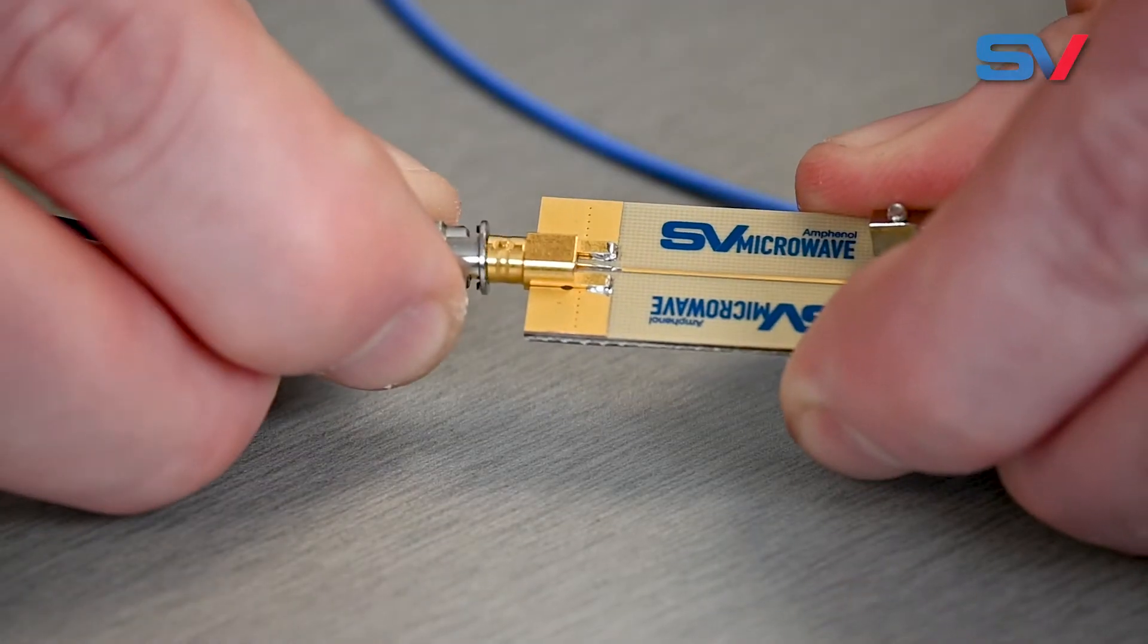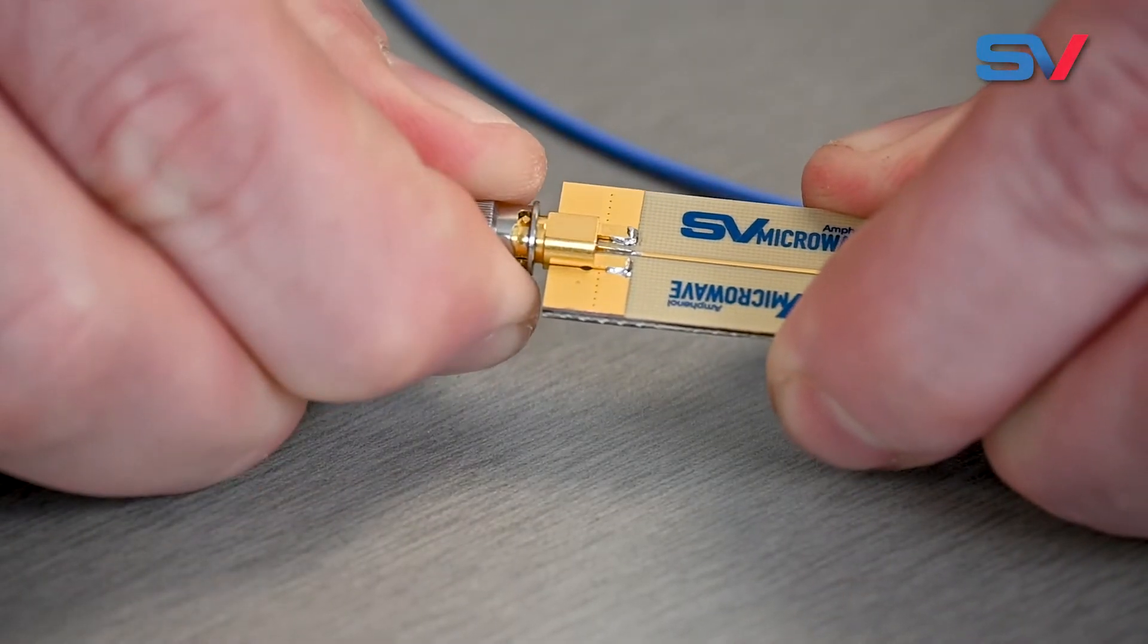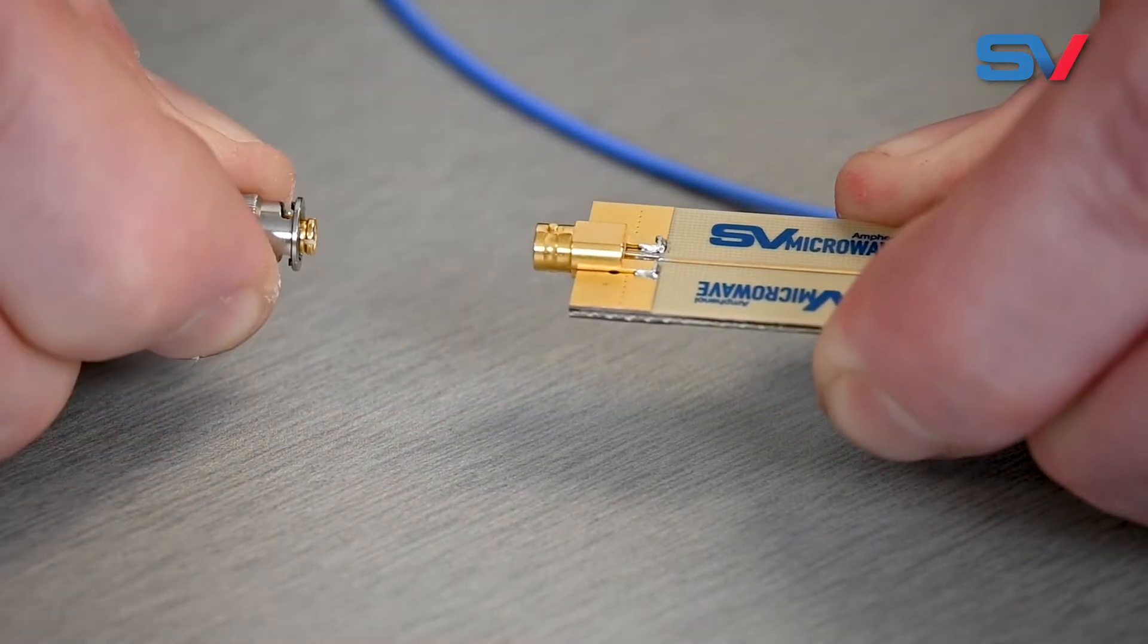To mate these, push the cable connector into the PCB connector into the lugs and gauge and turn the nut 90 degrees. To remove it, turn the nut back the other way 90 degrees and remove. It really is that simple.